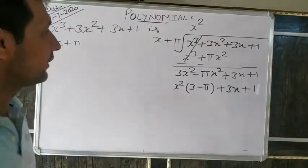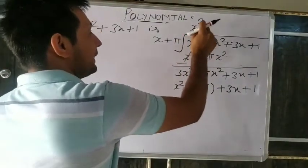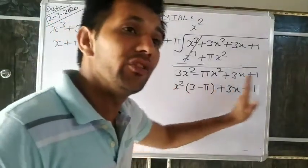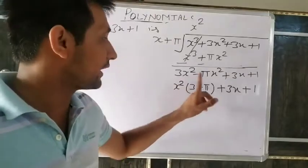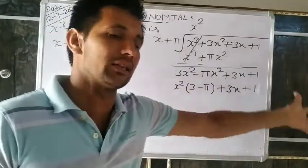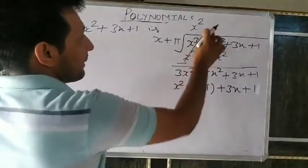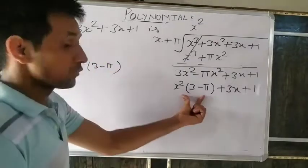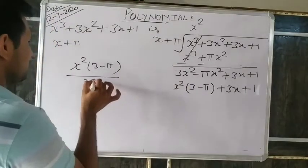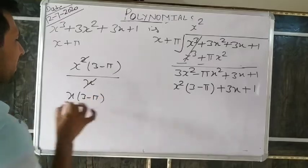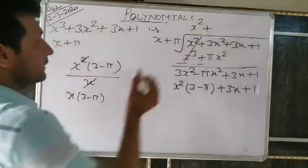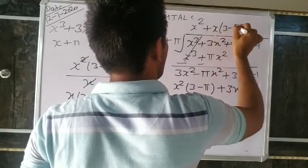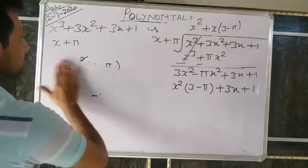Subtract — change sign. (3−π)x² minus (3−π)x² equals zero. What remains: 3x minus (3−π)x. These are like terms — x is common. So (3−π) remains from each: 3 minus (3−π) equals π. Bring down +1. So π·x+1 remains. Again divide: π·x divided by x gives π. Write plus π in the quotient.